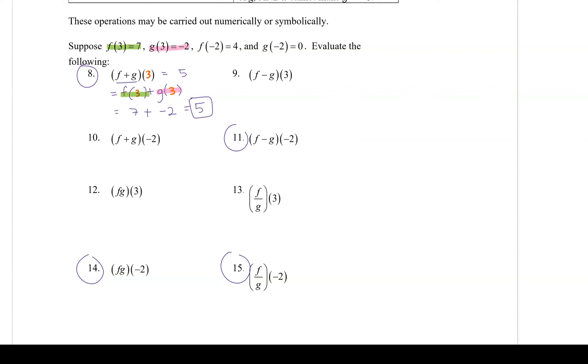Let's take a look at number 11, f minus g of negative 2. We can write it out like we did for the addition, the same idea here, f(x), but x is negative 2, minus g(x), but x is negative 2. And then noticing f of negative 2 is 4, and g of negative 2 is 0. I can replace f of negative 2 with 4, and g of negative 2 with 0. Subtract them, 4 minus 0 is 4, so I know f minus g of negative 2 is 4.